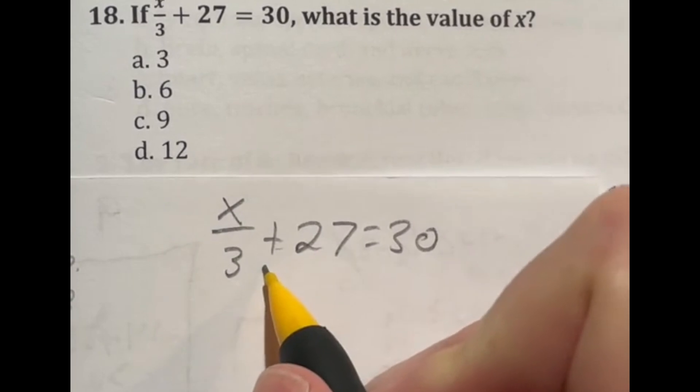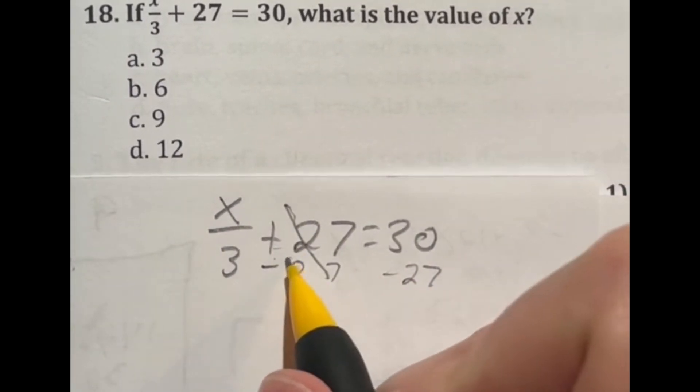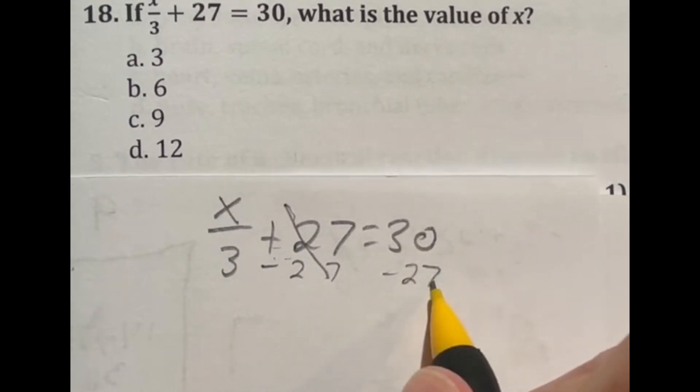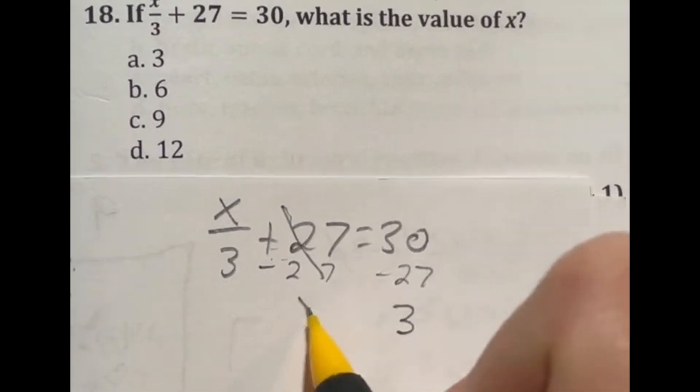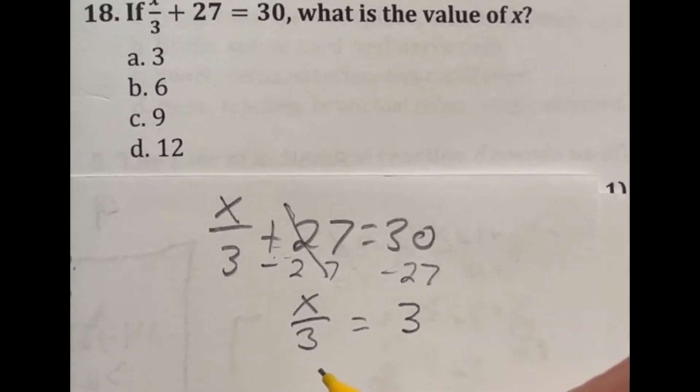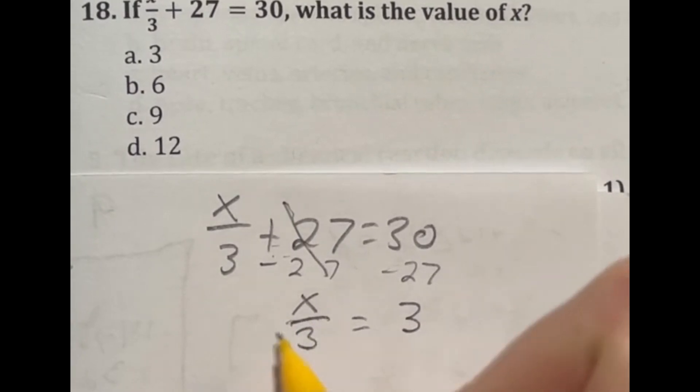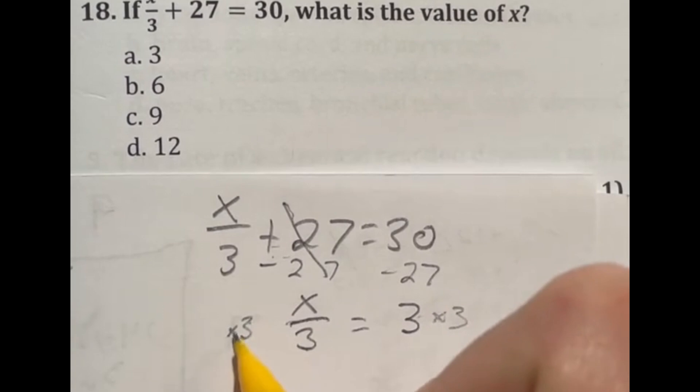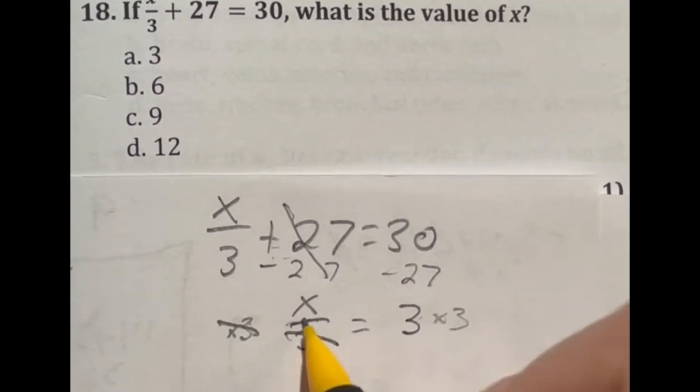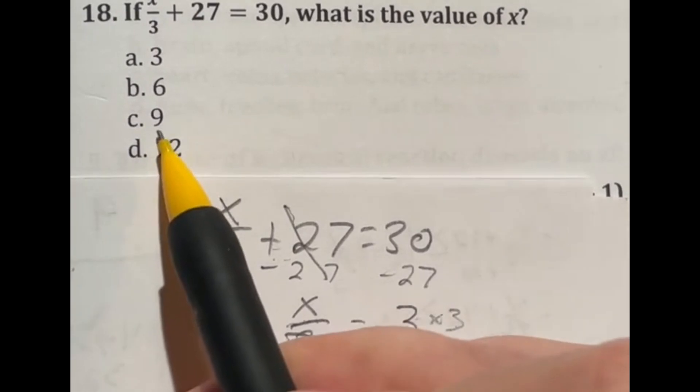So in this case, we're going to subtract that 27 from both sides because that's the opposite of adding. It cancels out over here. And anything I do on this side of the equation, I have to do on this side. So 30 minus that 27 is going to give me three. So now I have x over three equal to three. A lot of times they do questions like this because kids see there's a three here and three here, they cancel out and I'm done. In this case, it's actually the opposite because we are dividing by this three right now. So the opposite of dividing would actually be to multiply each side by three. So we're going to do three times three over here and multiplying by three will cancel it out over here, which means we're going to be left with x equal to three times three, which is nine. So it looks like our answer should be C.